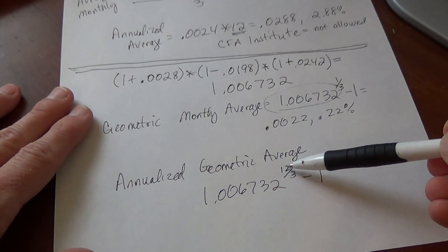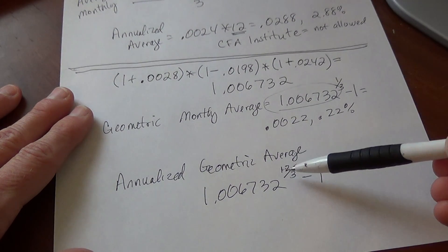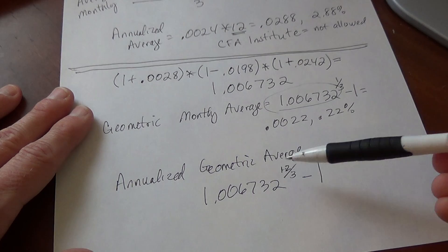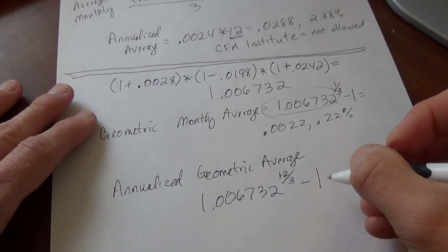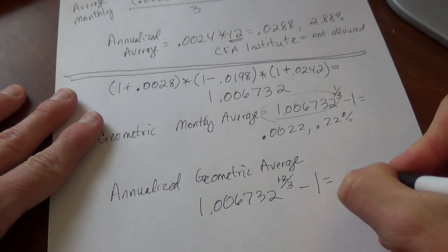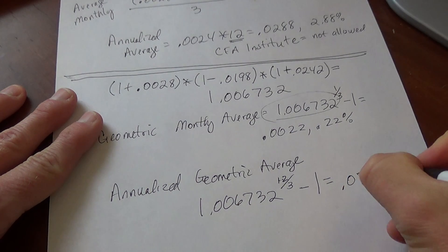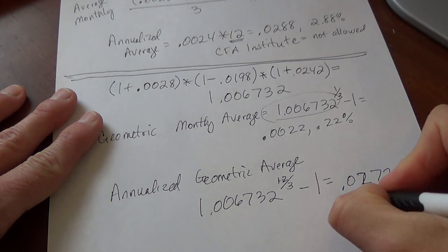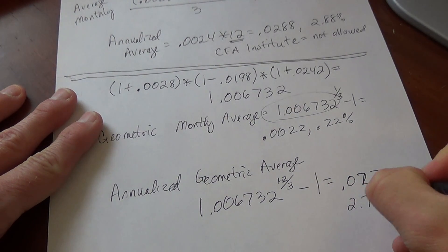So again, if this had been weekly, you would have raised it to the 52 over 3. But since it's monthly, you raise it to 12 over 3. That minus 1, and you'll get 0.0272, or 2.72%.